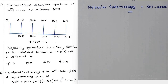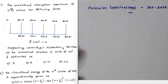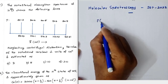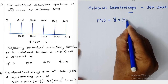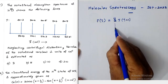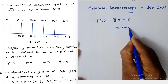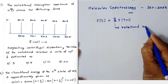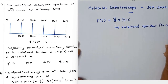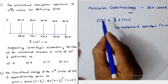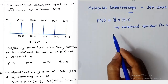If we neglect centrifugal distortion, then the rotational energy formula is F(J) = B·J(J+1), where B is the rotational constant in centimeter inverse (wave number units). This formula itself gives energy in centimeter inverse.